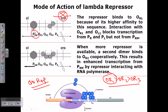The polymerase comes and binds to the promoter PRM and starts transcribing genes in the left-hand direction. When more repressor is available, a second dimer binds to OR2 cooperatively. This results in enhanced transcription from PRM by the repressor interacting with RNA polymerase, which enhances the polymerase to act properly.